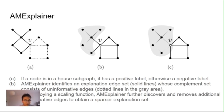For node V, clearly it will have a positive label. However, an explainer could identify an explanation edge set as the solid lines shown in figure B, which is informative but not so sparse.